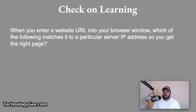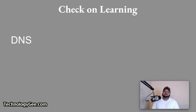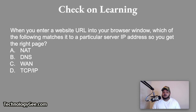Next question: when you enter a website URL into your web browser window, which of the following matches it to a particular server IP address so you get the right page — NAT, DNS, WAN, or TCP/IP? The correct answer is DNS — domain name server or domain name system. It takes the words 'youtube.com' and matches it against its appropriate IP address. Also, when taking these certification exams, you need to get familiar with all the acronyms and understand what they mean, because the test will not always spell them out for you.